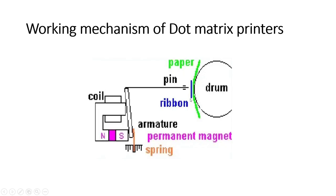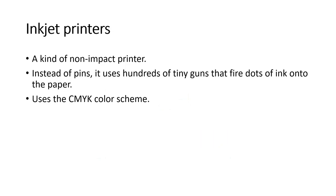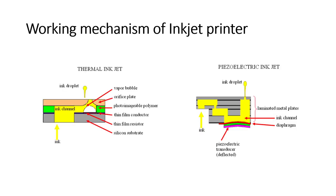Next we move on to inkjet printers, which are a type of non-impact printer highly different from dot matrix printers. Instead of pins, inkjet printers use hundreds of tiny guns that fire dots of ink onto the paper. They use the CMYK color scheme, which is a subtractive color model. There are two types of drop-generating mechanisms. Both systems are airtight and stable at the beginning.